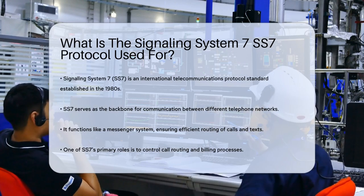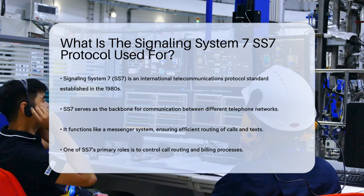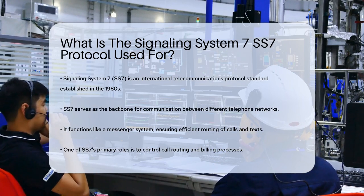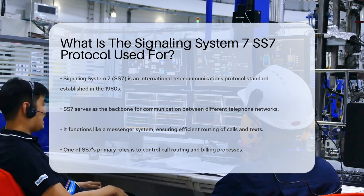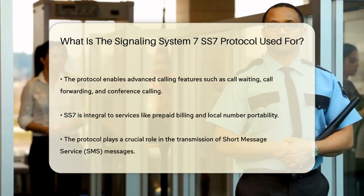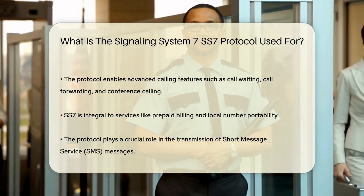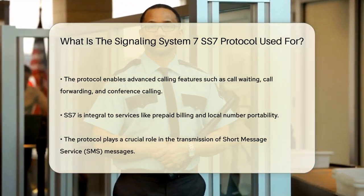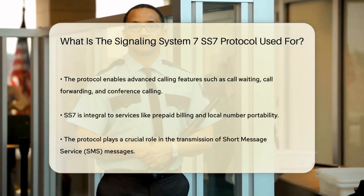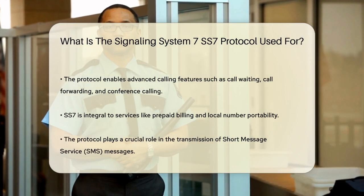One of the primary functions of SS7 is to control how telephone calls are routed and billed. It's not just about connecting calls — it also enables advanced calling features like call waiting, call forwarding, and conference calling. If you've ever used services like prepaid billing or local number portability, SS7 is behind the scenes making it all work.